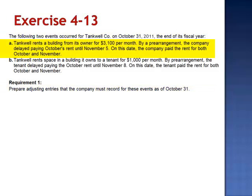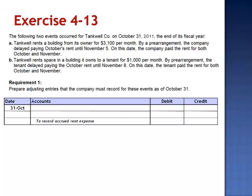Letter A states that Tankwell rents a building from its owner for $3,100 per month. By prearrangement, the company delayed paying October's rent until November 5. On this day, the company paid the rent for both October and November. To accrue the rent expense on October 31, the journal entry is a debit to rent expense for $3,100 and a credit to rent payable.